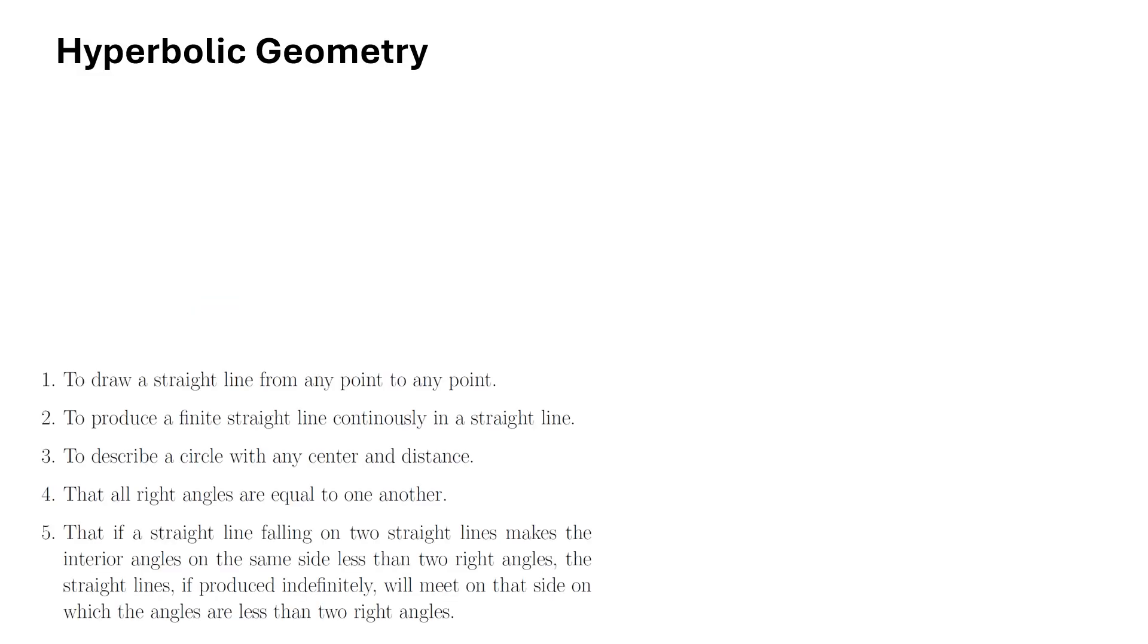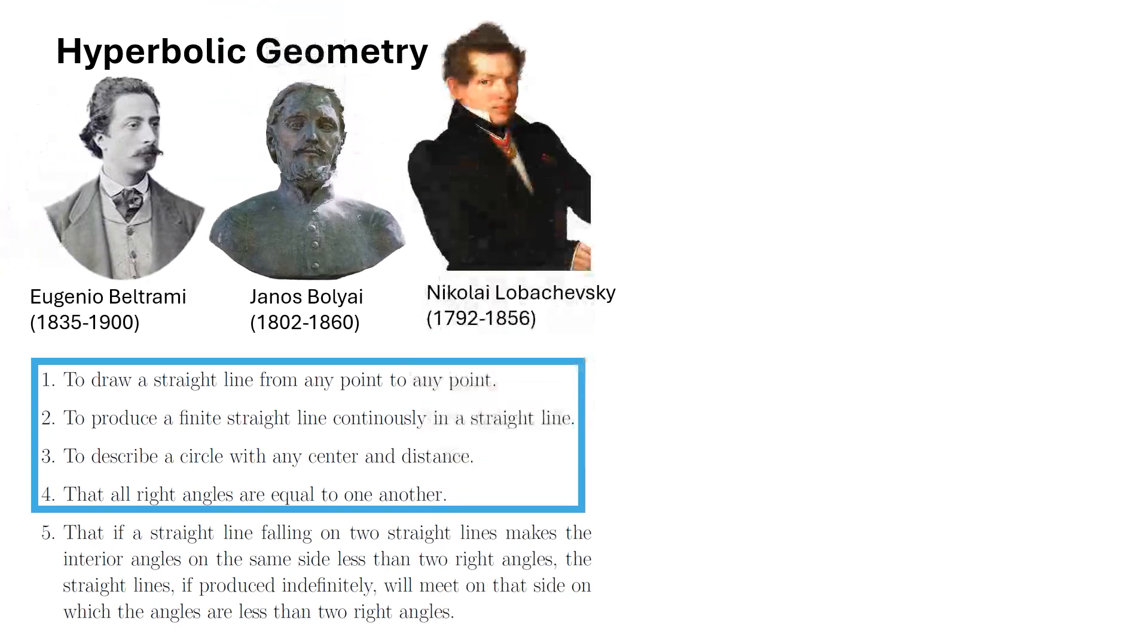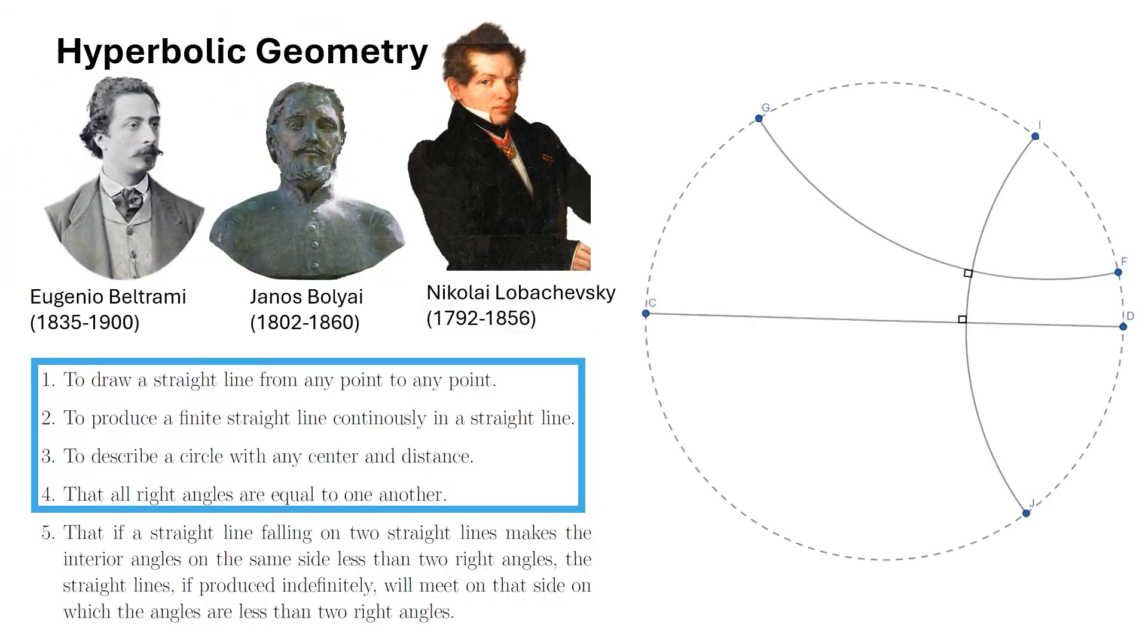Hyperbolic geometry. After Euclid defined the Euclidean geometry of the plane using five axioms, it was thought for a long time that the first four of his axioms might imply the fifth. A lot of work went into trying to prove this, but to no avail. In the mid-19th century, mathematicians found an example of a space that satisfied the first four of Euclid's axioms but failed the fifth. This proved that to obtain Euclidean geometry, one had to assume all five of Euclid's axioms, but it also showed that other types of planar geometries existed.